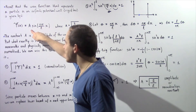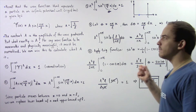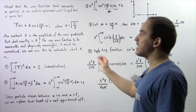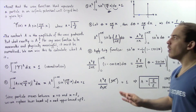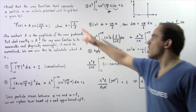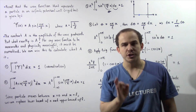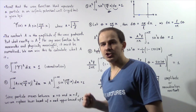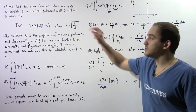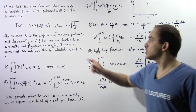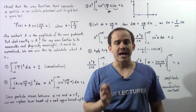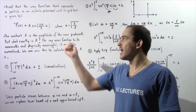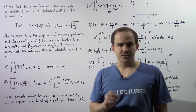So once again, this A represents the amplitude of our wave function — the wave produced by the particle inside our infinite potential well, also known as the rigid box. And because we used normalization to find what the equation for A is, this A is also known as the normalization constant of the particle inside our rigid box.